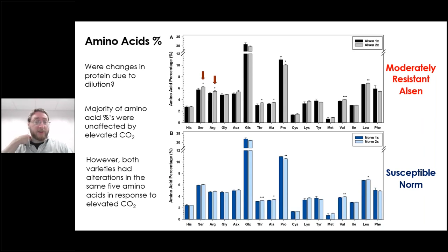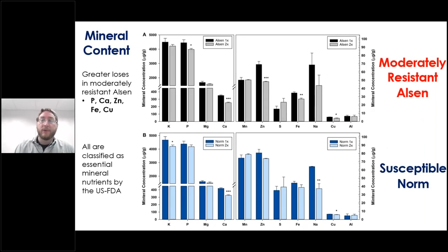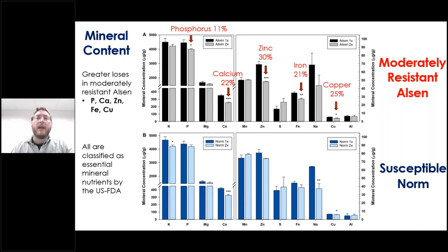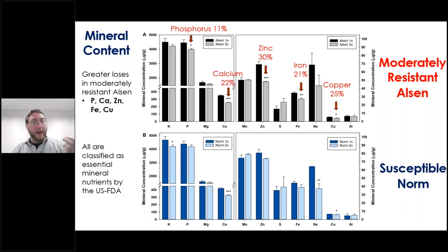Additionally, the moderately resistant Elsin had more amino acid ratio changes compared to the susceptible variety, including changes in serine and arginine. When looking at mineral content, both varieties had significant decreases, but the mildly resistant Elsin had far greater losses: 11% loss of phosphorus, 22% loss of calcium, 30% loss of zinc, 21% loss of iron, and 25% loss of copper — all classified as essential mineral nutrients. This is very concerning for consumers, and will also impact the fungal pathogen, which is also consuming this grain.